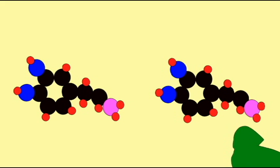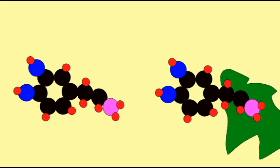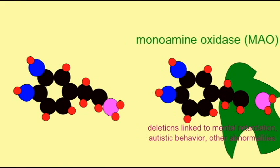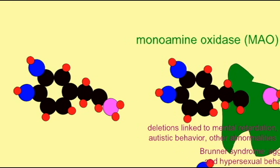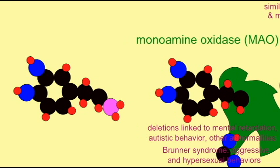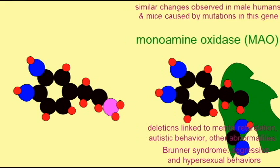In humans, mutations in this gene cause Brunner syndrome, in which males suffer from mild retardation and display a variety of aggressive and hypersexual behaviors, in addition to other behaviors ranging from arson to suicidal behavior.